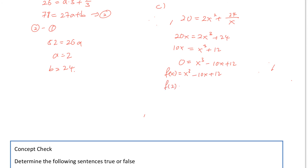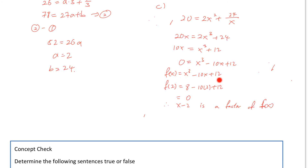I check f(2) equals 8 minus 10 times 2 plus 12, which equals 0. So I know x minus 2 is a factor of f(x). How can I check it? You can try x equals 1, negative 1, 2, negative 2, 3, negative 3, 4, negative 4, and 6. Why do we not need to check 5? You may have some provisions on the factor theorem — that's why I will not check 5 or negative 5. Check them one by one. Luckily, f(2) equals 0, so x minus 2 is a factor.